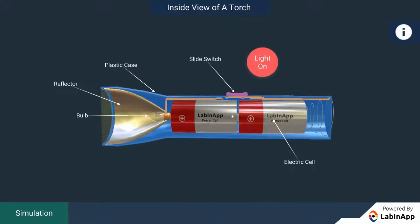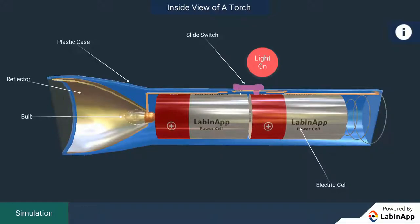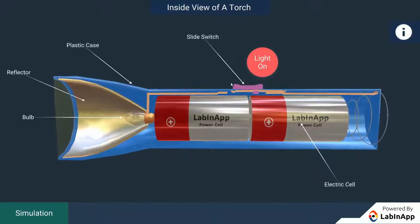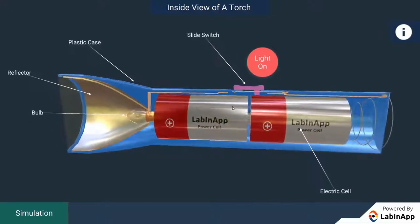But the wire is broken in the middle. We know that when the wire is not continuously connected, then the bulb doesn't glow.